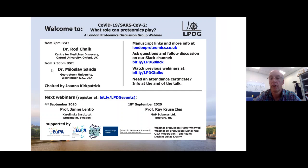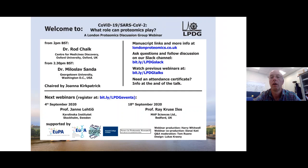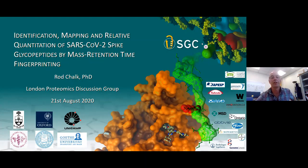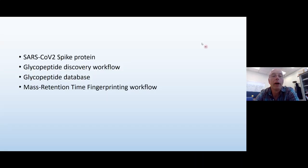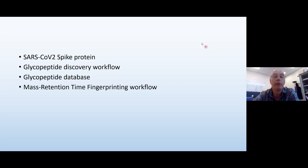Thank you very much, Joanna. Today I'm going to be talking about a technique which we've called mass retention time fingerprinting for characterisation of the SARS spike protein. I will say one or two things about the problems involved in analysing spike, then describe the glycopeptide discovery workflow we've used, look at the glycopeptide database we've constructed, and then talk about how we can use that for a very simple workflow for spike characterisation.